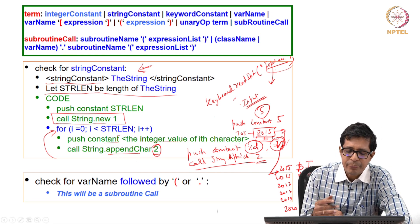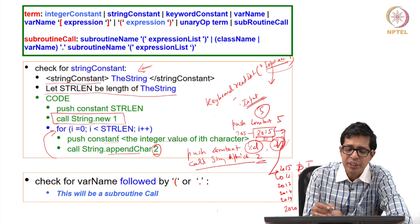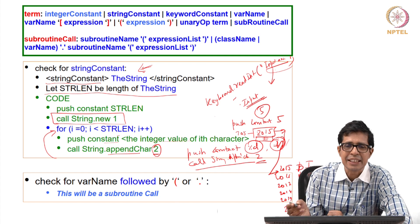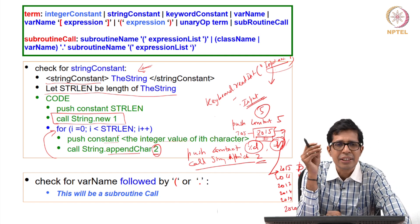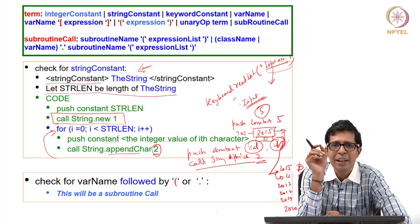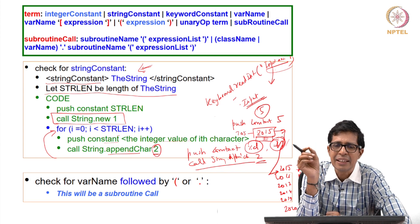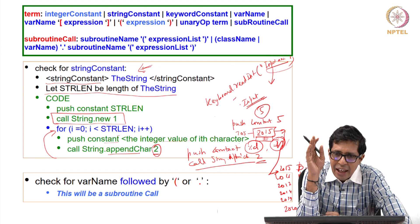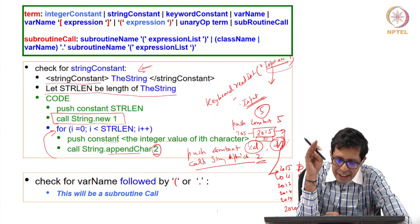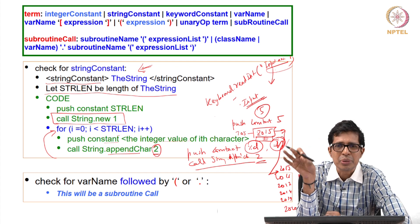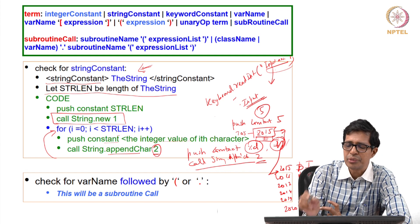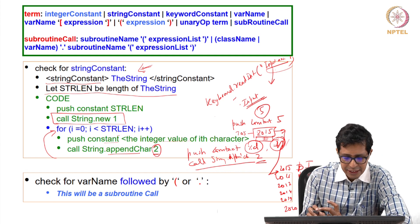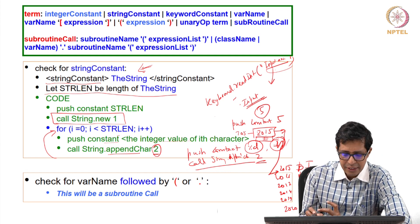At the end of processing a string constant term, the top of the stack will have a pointer to the starting address of the string, and the entire string will be stored there. This is how string constant is handled.